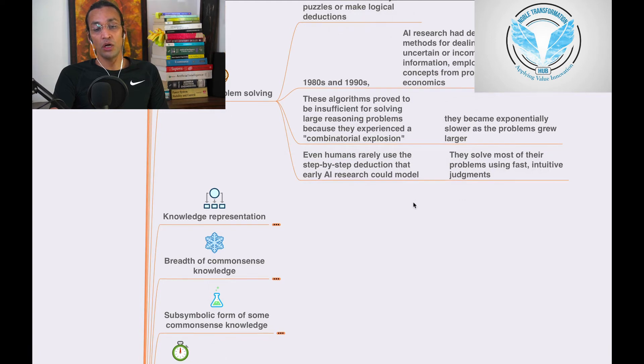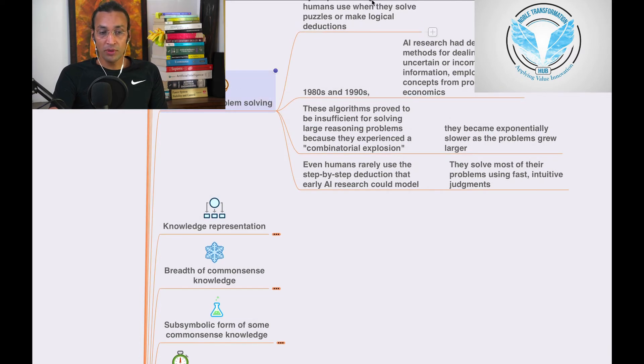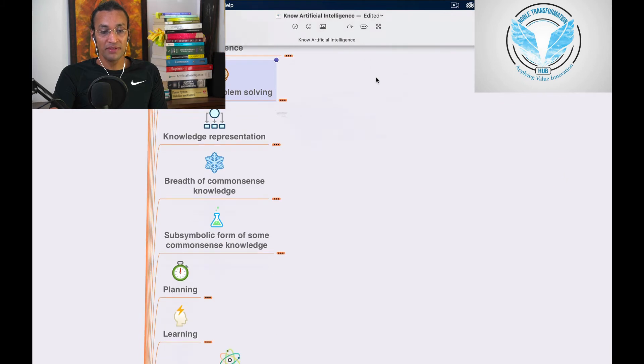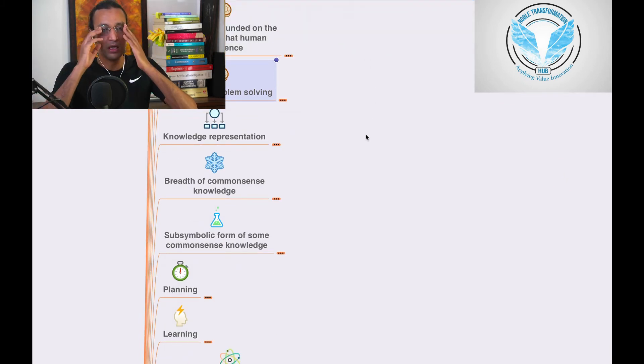Even humans rarely use the step-by-step deduction that early AI research could model. Humans are always based on intuitive things. We do intuitive decisions, and sometimes they are wrong. Sometimes it depends on how good your intuitive channel is. They tried step-by-step process for AI, but then they couldn't succeed in this model.